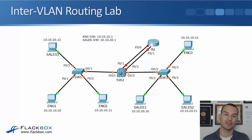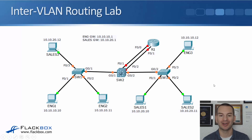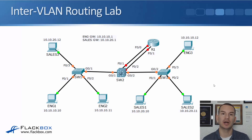Now let's configure this in the lab. The topology uses the same setup from the VLAN section: Switch 1 and Switch 3 with engineering and sales PCs attached. The engineering VLAN is 10, sales is VLAN 20. Router R1 has been added, connected to Switch 2. Fast 0/0 is the engineering gateway at 10.10.10.1 connecting to Fast 0/1 on the switch, and Fast 0/1 on the router is the sales gateway at 10.10.20.1, with the switch interface on the other side being Fast 0/2. Layer 2 VLAN configuration is already in place with trunks end-to-end.